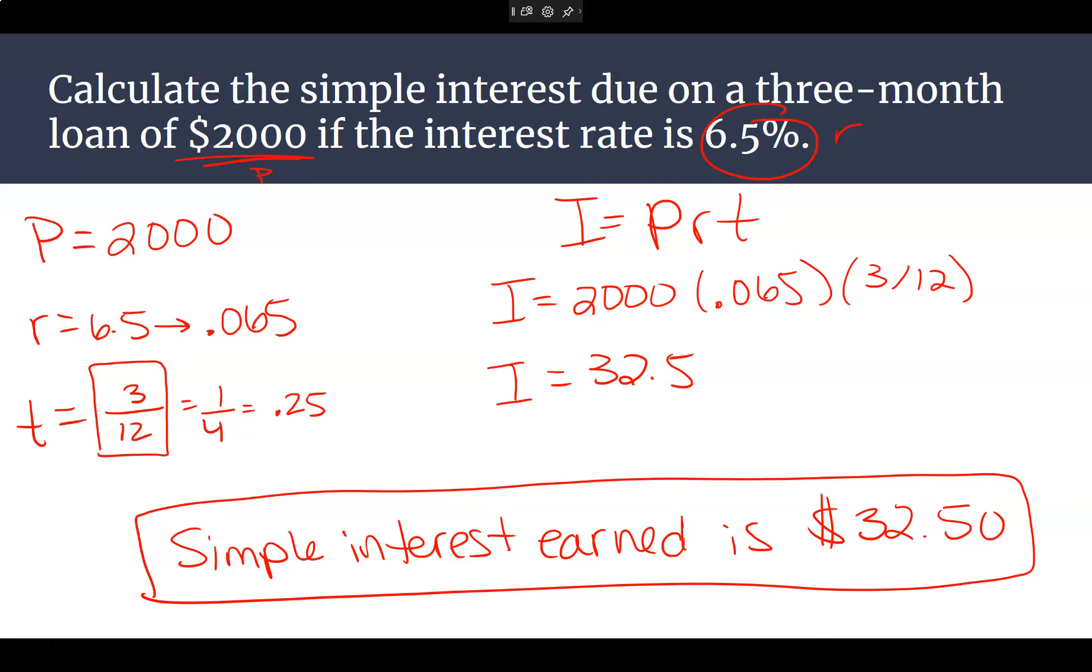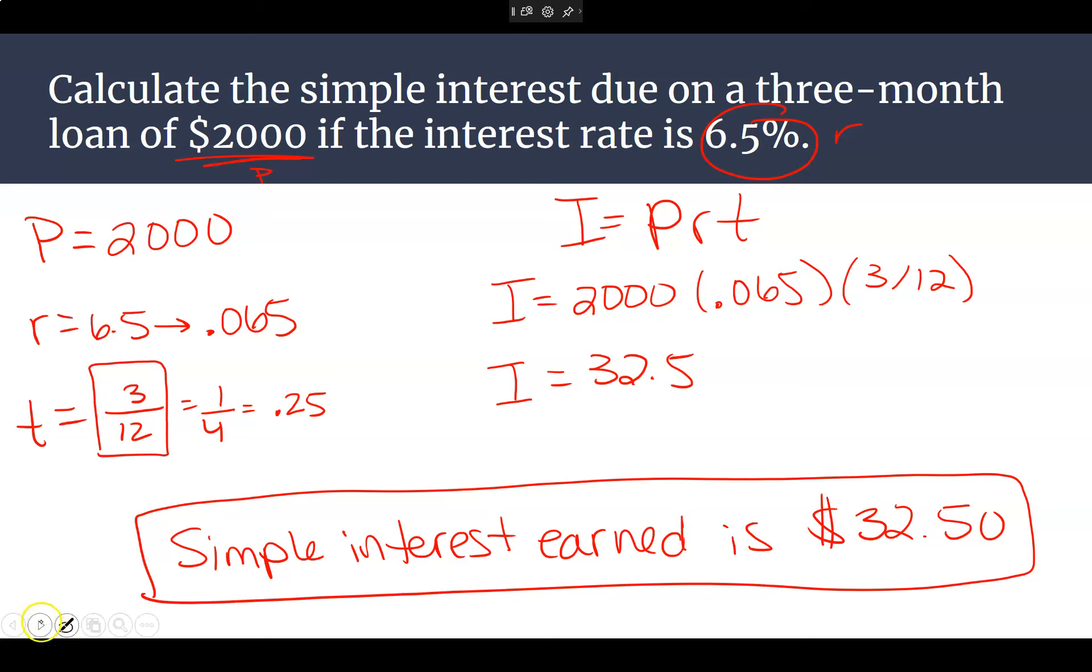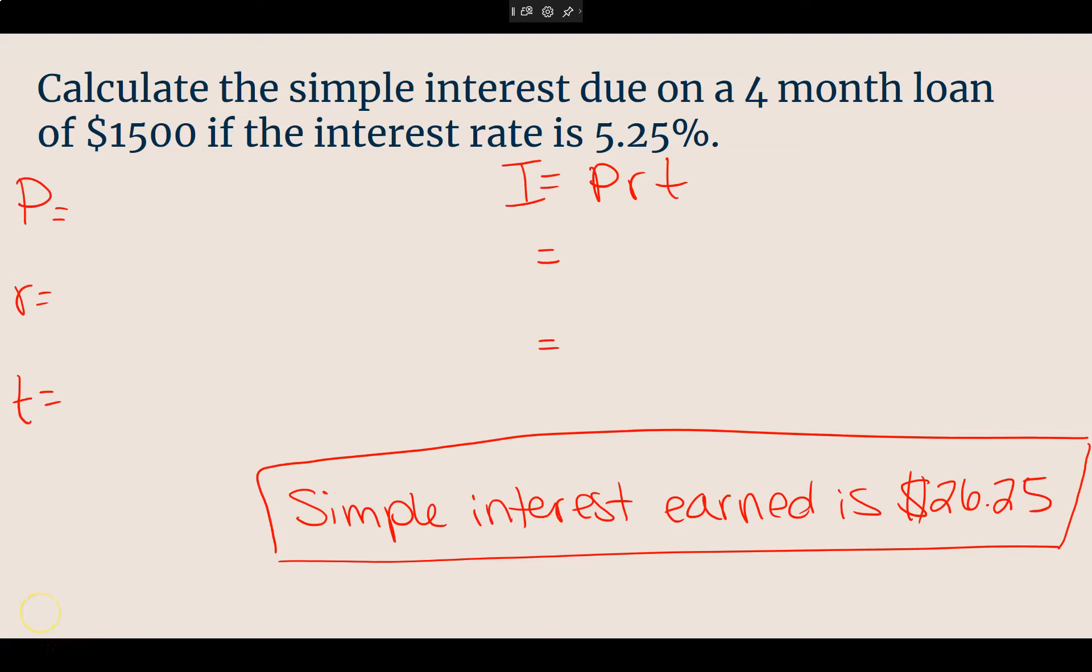Questions for me at all about the months or anything? You do the next one. This one's all you. Calculate the simple interest due on a four-month loan of $1,500 if the interest rate is 5.25%. Try this one, and when you get it done, check with your neighbor. So we should have found out that we are earning $26.25 in my four-month loan.